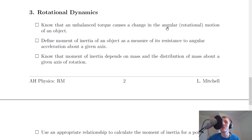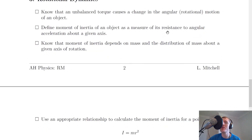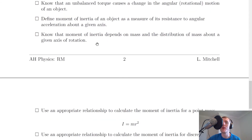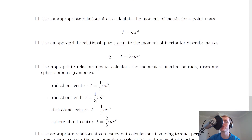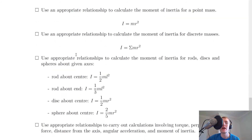Lastly we're going to look at section 3 on rotational dynamics. You need to know that an unbalanced torque causes a change in the angular or rotational motion of an object, just like an unbalanced force causes a change in linear motion. Define moment of inertia as a measure of an object's resistance to angular acceleration about a given axis — inertia being the resistance of an object to a change in its motion. Moment of inertia depends on mass and the distribution of mass about a given axis of rotation. Use i equals mr squared for a point mass, and i equals the sum of mr squared for discrete masses.